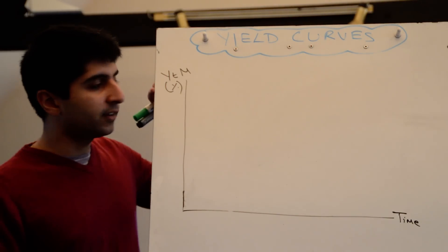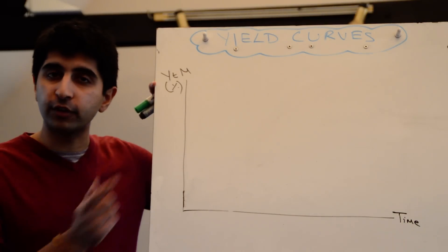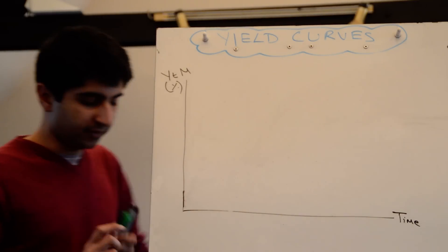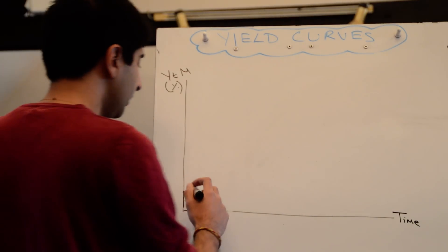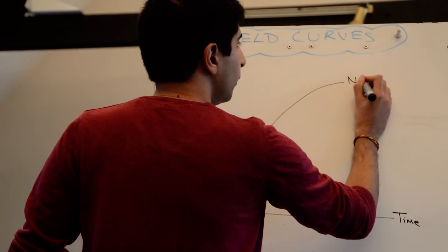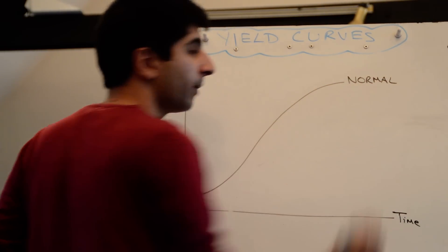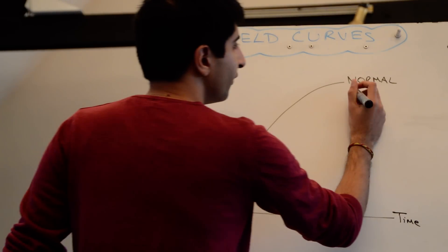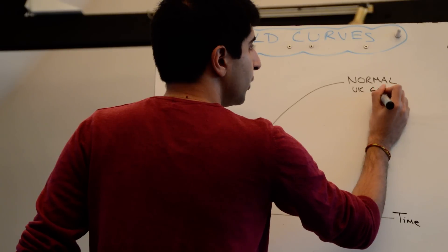Yield curves represent the relationship between yields on bonds — I'm going to focus on government bonds in this video — and time. A simple yield curve looks like that. We can call that a normal yield curve, which may represent the relationship between yields and time on UK government bonds, so this could be for UK gilts.